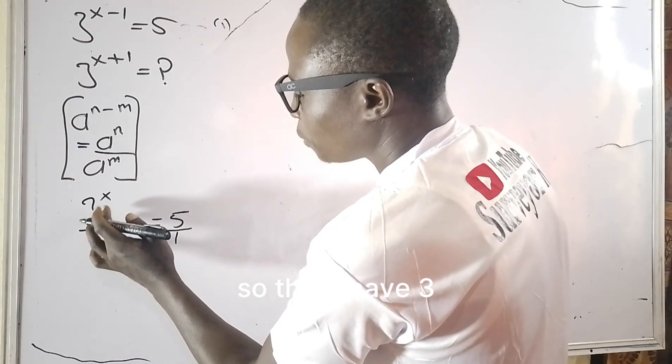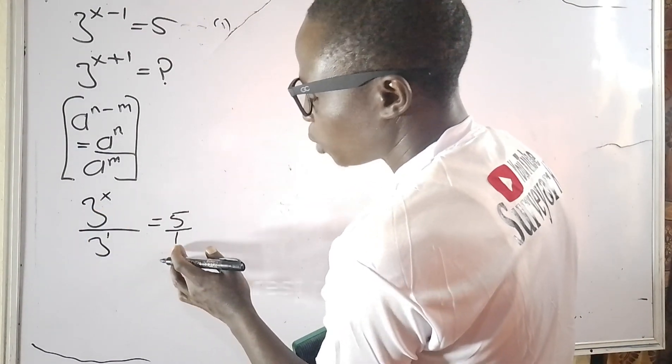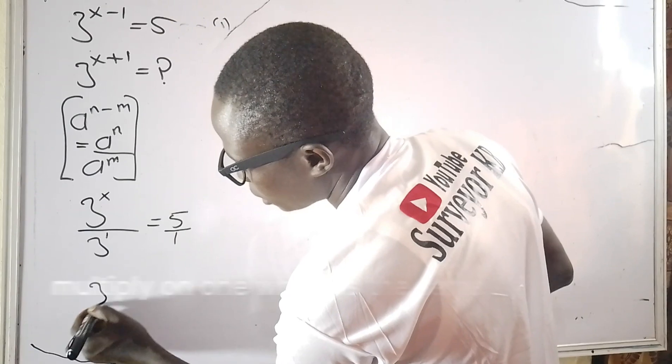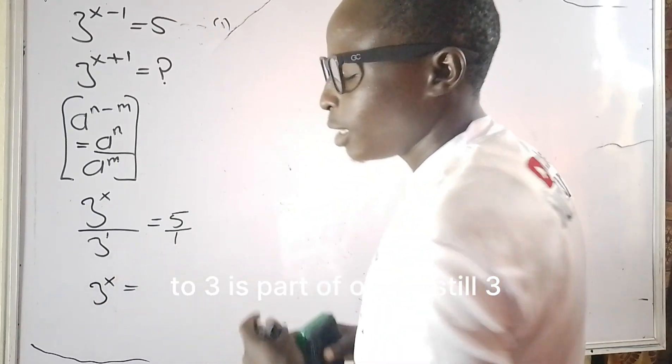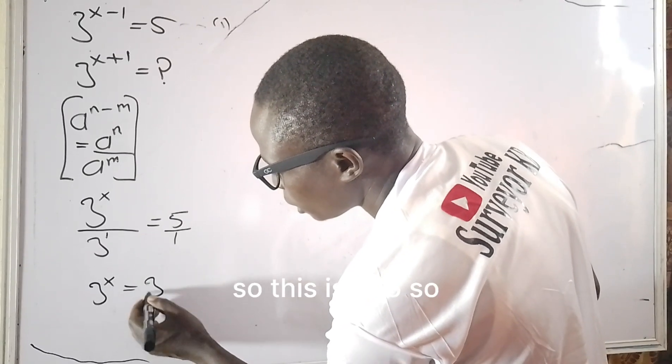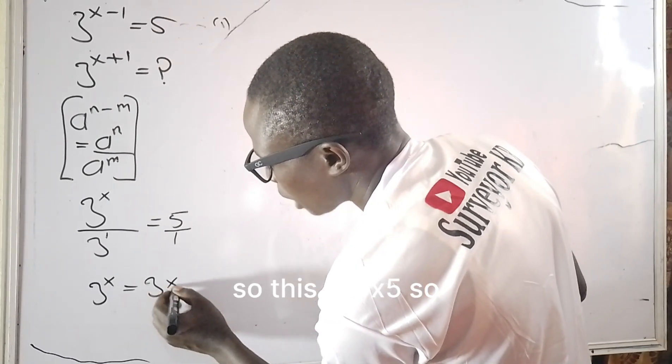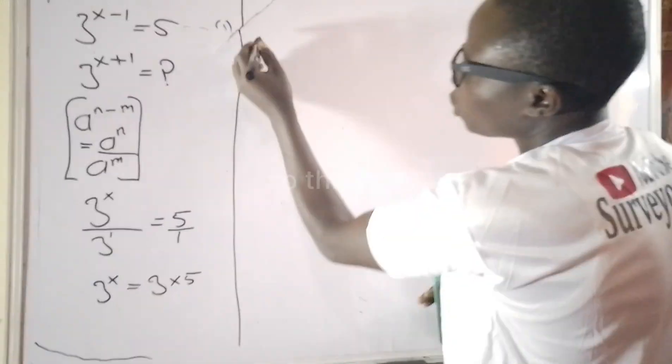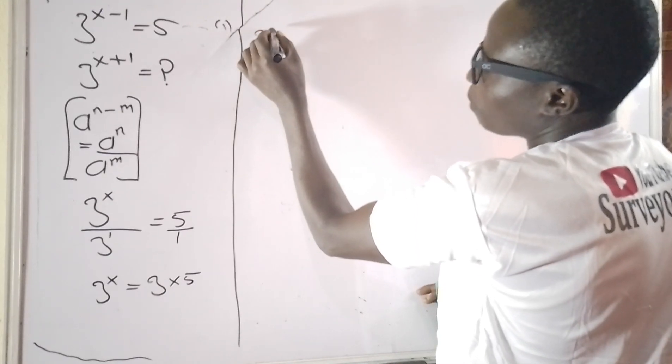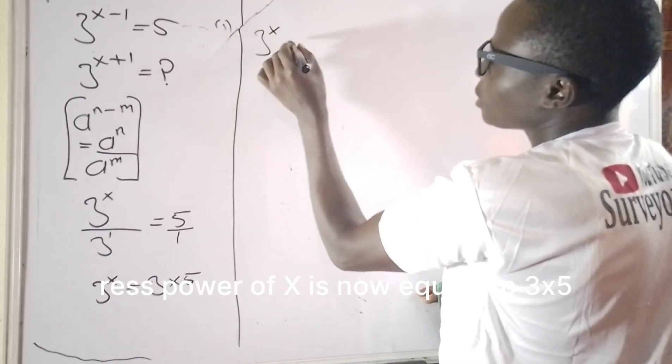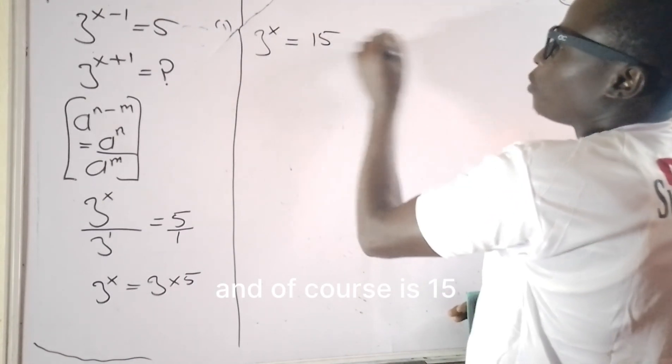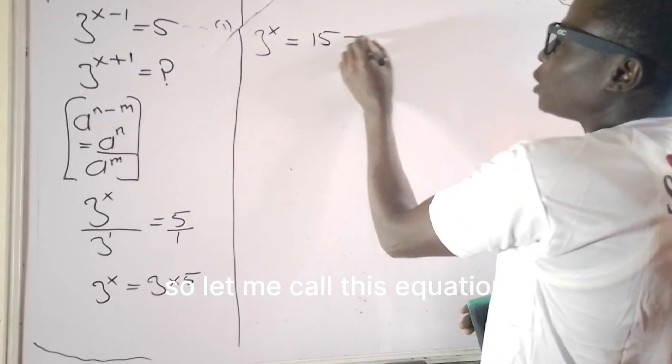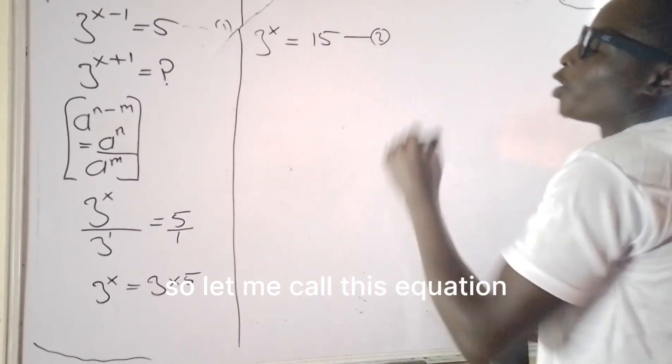So that I have 3 raised power of x multiply 1, which is the same thing as 3 raised power of x. It's equal to 3 raised power of 1, which is still 3. So this is 3 times 5. So 3 raised power of x is now equal to 3 times 5, which is 15. Let me call this equation 2.